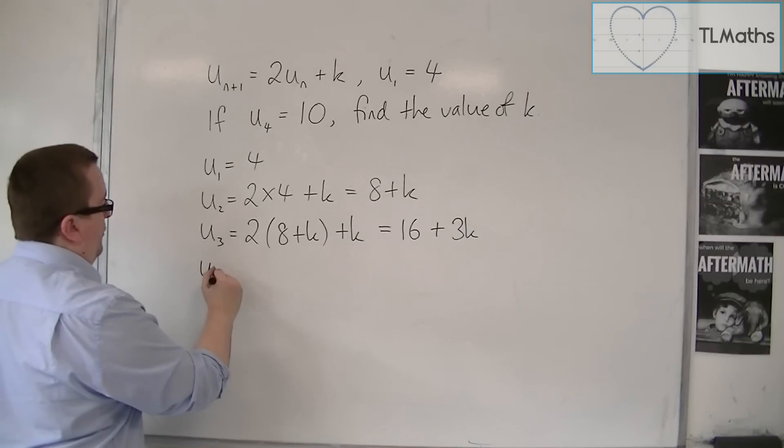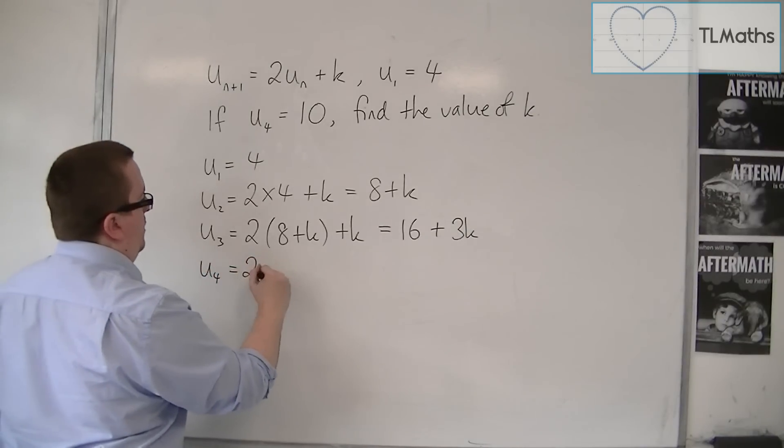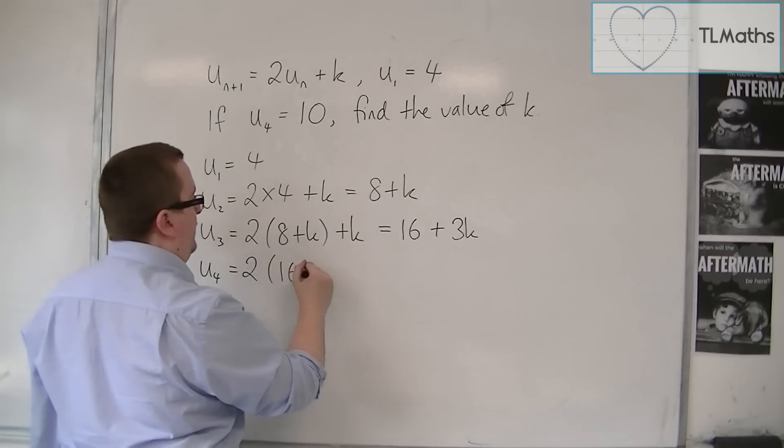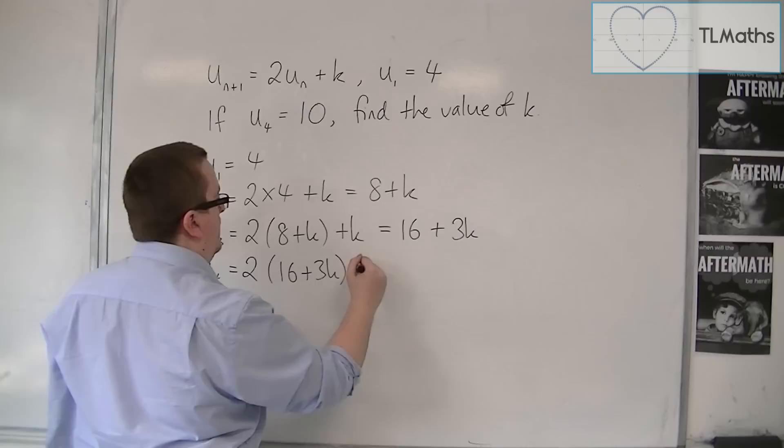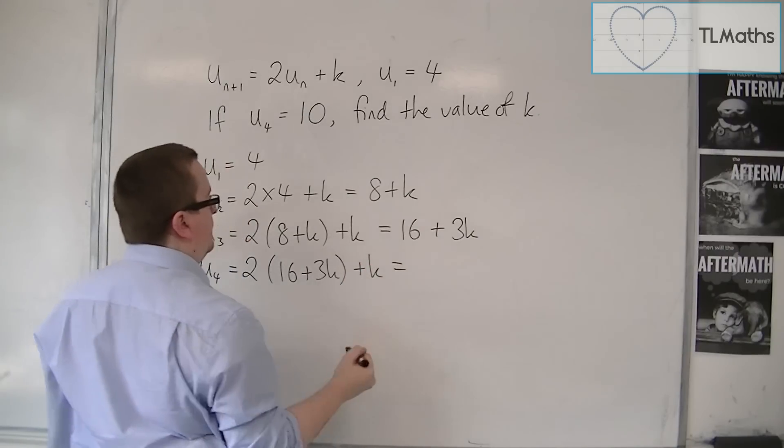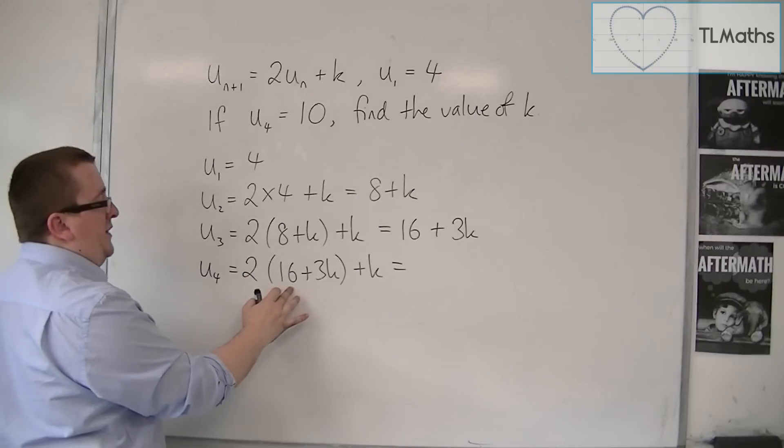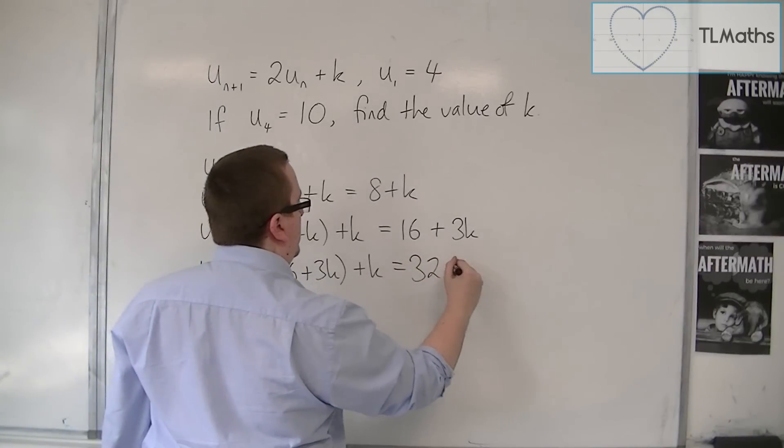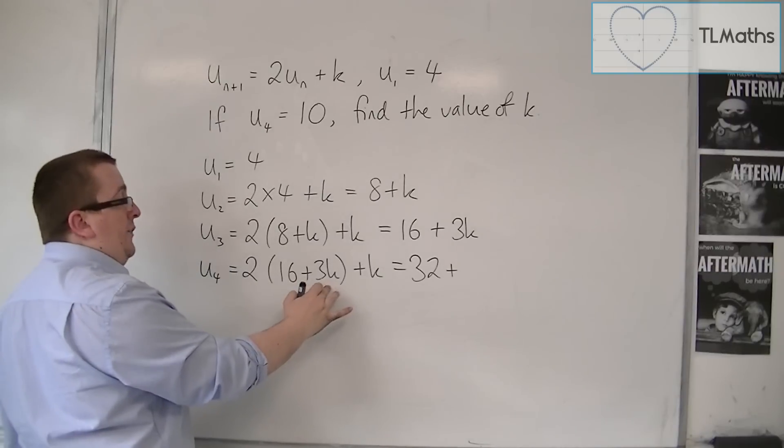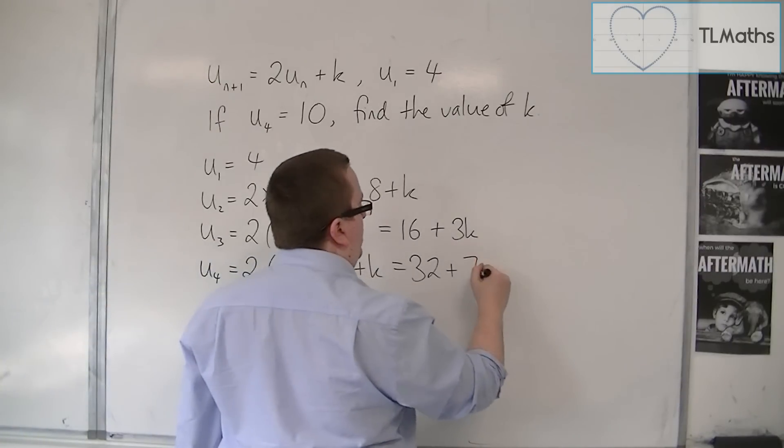Then the fourth term is 2 lots of the previous term, so 16 plus 3k, plus k. So 2 lots of 16 is 32, 2 lots of 3k is 6k, plus a k is 7k.